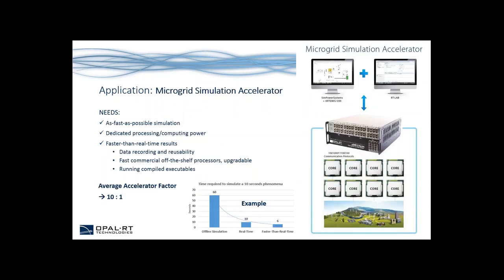The fourth application is our microgrid simulation accelerator. In this case, we're not necessarily talking about real-time simulation, but faster-than-real-time simulation. We want as fast a simulation as possible, requiring dedicated processing and computing power. We want faster-than-real-time results with data recording, using fast commercial off-the-shelf products that are easily upgradable, with objectives to run compiled executables. Based on our experience, we have seen an average acceleration factor of 10 to 1 — meaning, for example, if a 10-second phenomenon takes 60 seconds offline, it would take 10 seconds in real-time and could be achieved in about 6 seconds in faster-than-real-time.